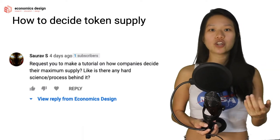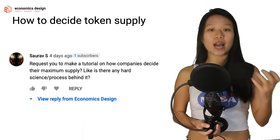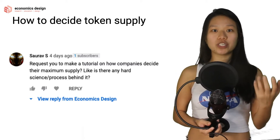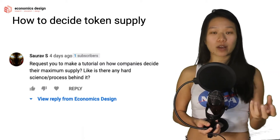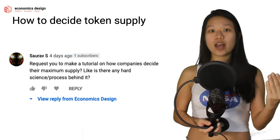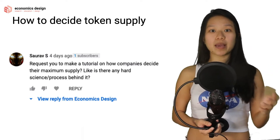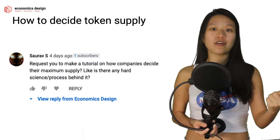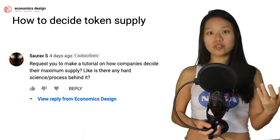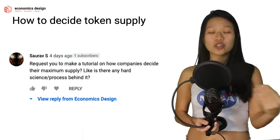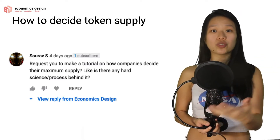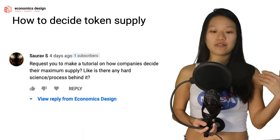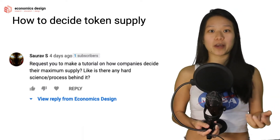If you're talking about equity — you're having tokens as a form of security, as a form of equity to your company — then you need to have a maximum supply, because the amount of tokens you give out have to correspond to a total of 100%. So that's where you need to have a level of maximum supply.